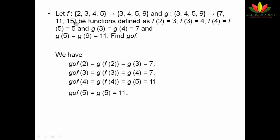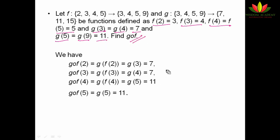Now let's see an example using composition of functions. Here f is defined as: f(2)=3, f(3)=4, f(4)=5, f(5)=9. And g is defined as: g(3)=7, g(4)=7 (or per the given values), g(5)=11, g(9)=15. We are asked to find g∘f. So g∘f(2) means g(f(2)) — since f(2)=3, we compute g(3) = 7. So g∘f(2) = 7.